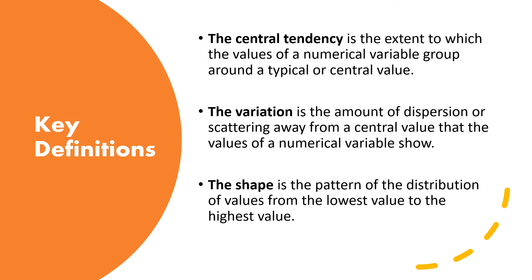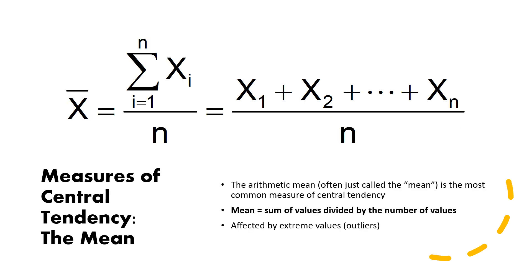Before we begin the chapter we need to understand some key definitions. Central tendency is the extent to which the values of a numerical variable group around a typical or central value. Variation is the amount of dispersion or scattering away from the central value — how data is scattered away from the mean. Shape is the pattern of distribution of values from the lowest to the highest value.